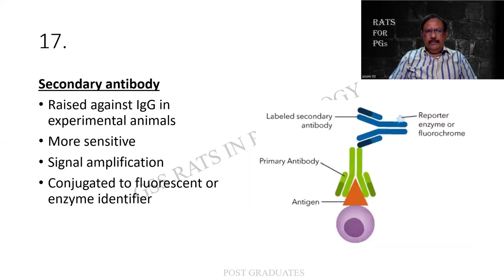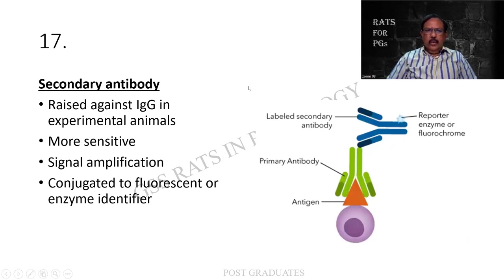We have mentioned the secondary antibody - it is raised against the immunoglobulin. Here there is an immunoglobulin to which you find another antibody is getting developed, so it is more sensitive. There is an amplification of the signal. Also, it can be conjugated to the fluorescent or enzyme identifier. What is a secondary antibody? It is raised against immunoglobulins, particularly IgG, in experimental animals. It is more sensitive - there is an amplification of the signal, that is magnification. And lastly, it can be conjugated to a coloring substrate, fluorescent or enzyme identifier. That is the advantage of the secondary antibody.